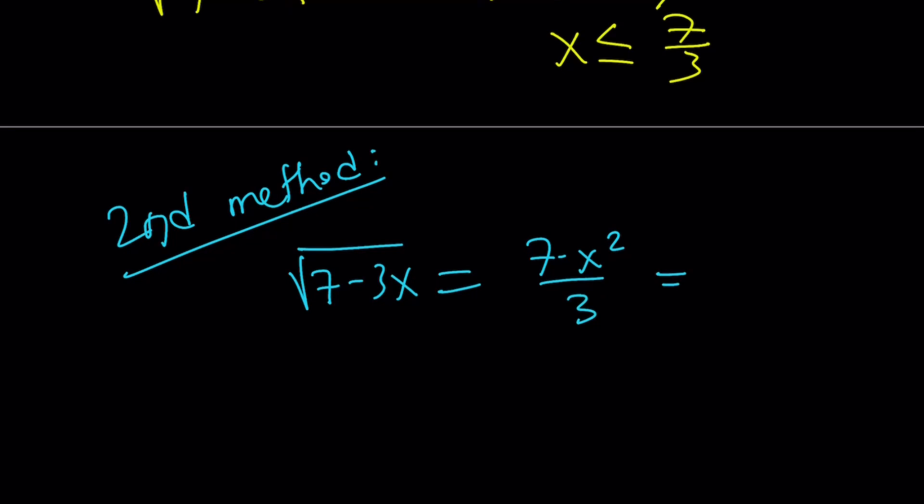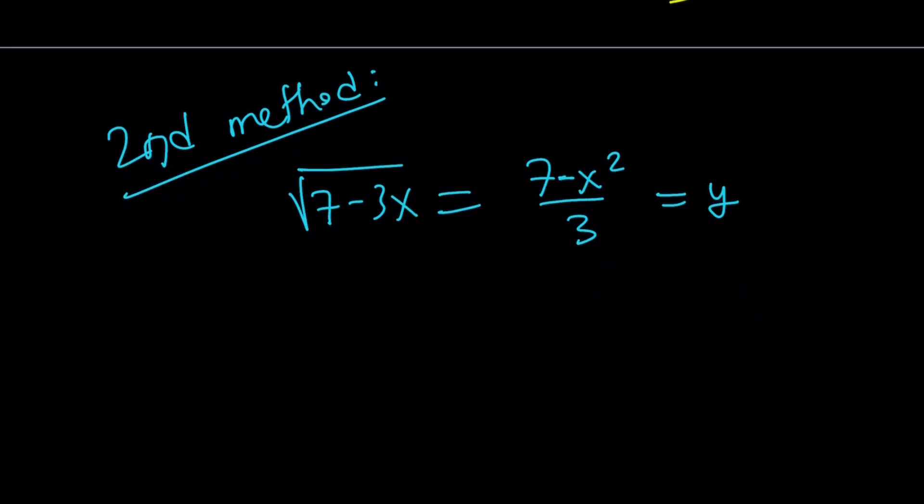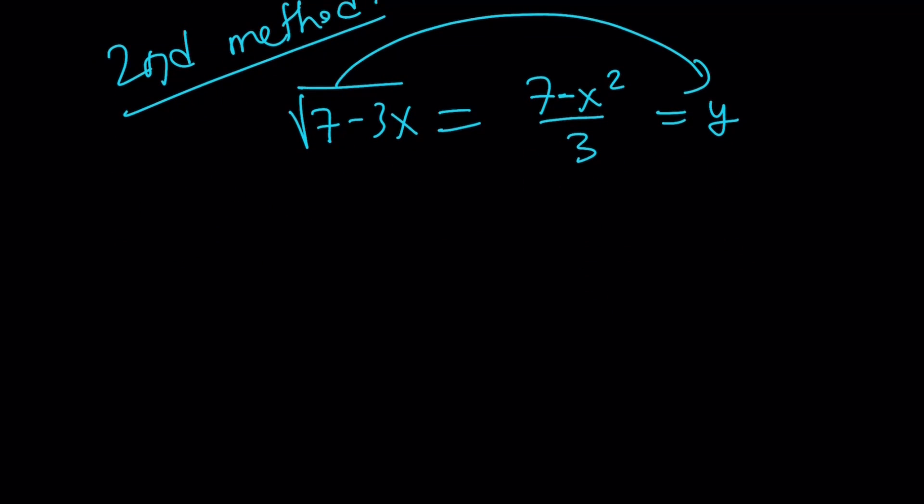We're going to set both of these equal to y. And then take a look at the first one. Square both sides. You're going to get 7 minus 3x equals y squared. And then take the second one. Cross multiply. 7 minus x squared equals 3y.